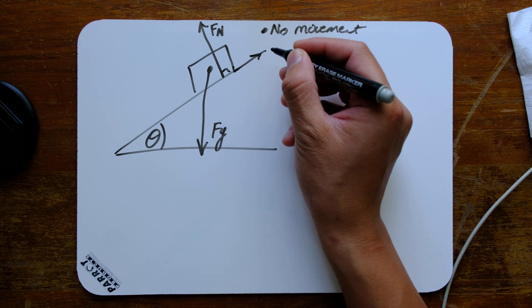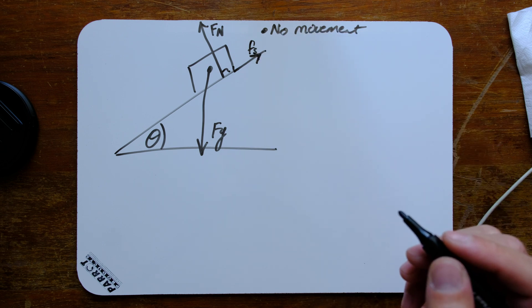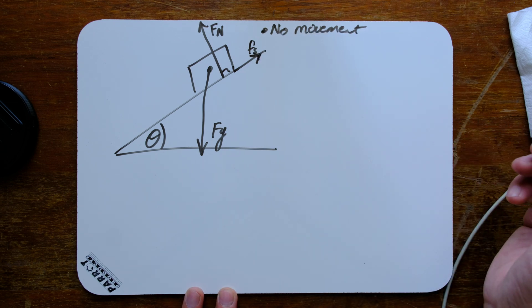Force of friction over up the slope, and because it is not moving, it is going to be a static frictional force.